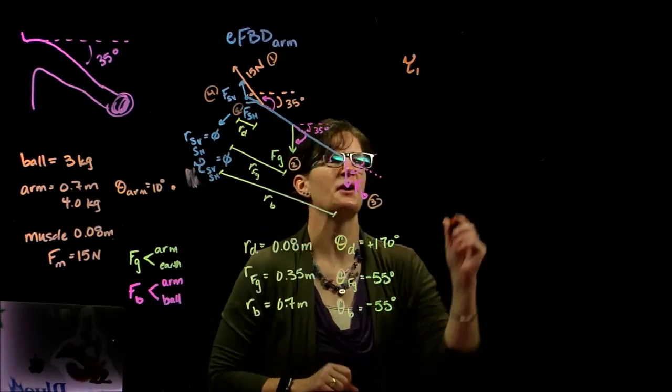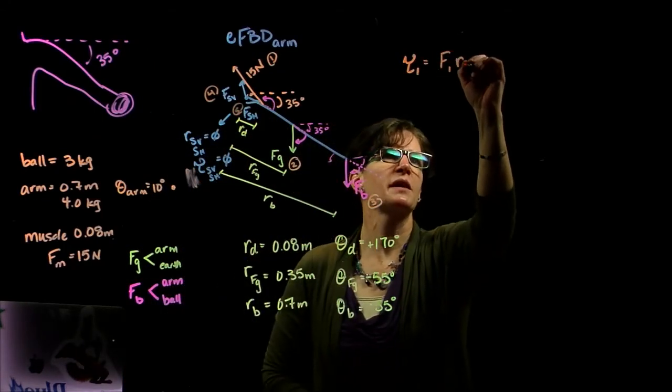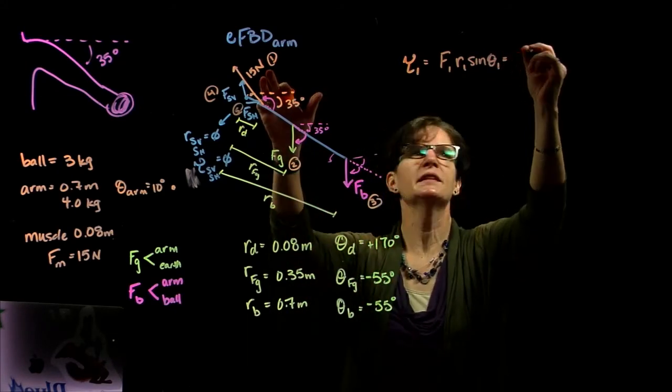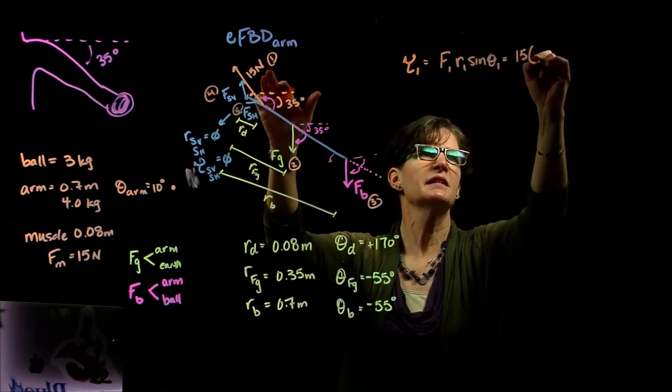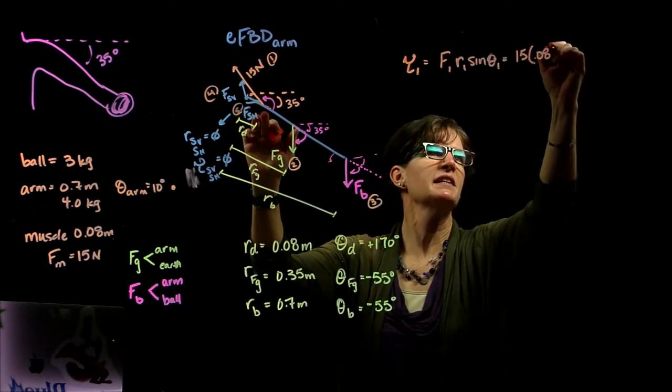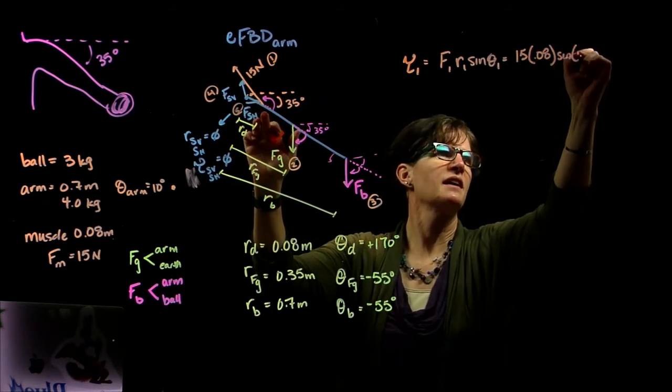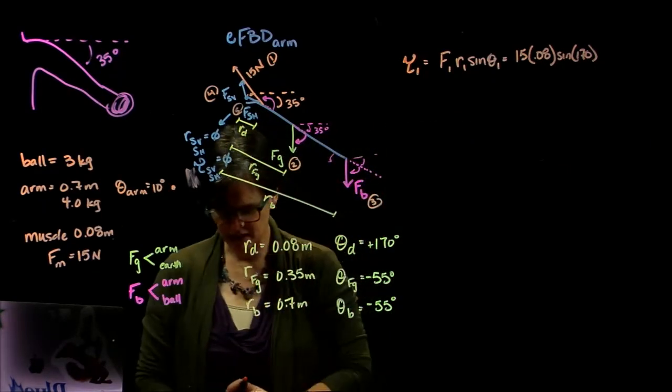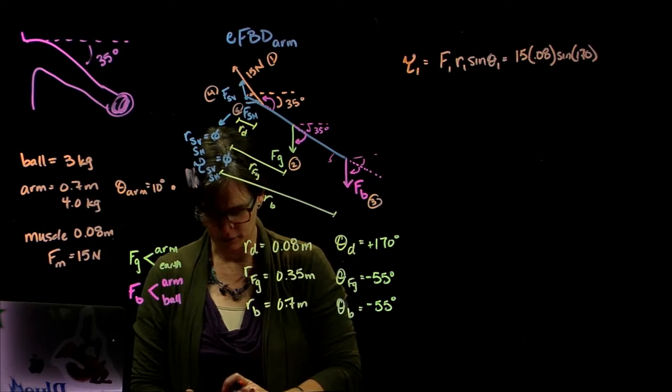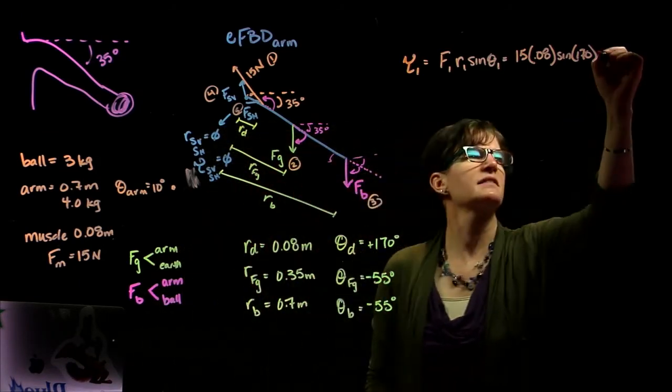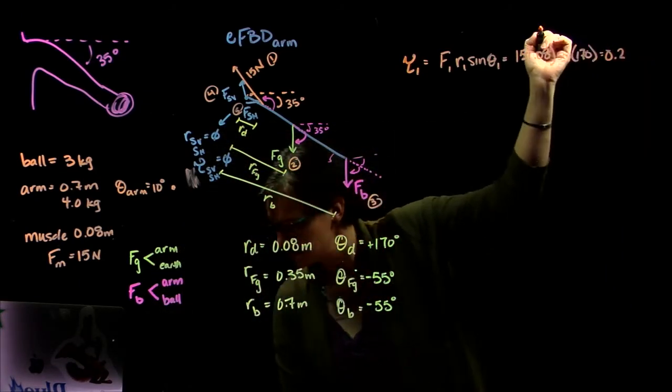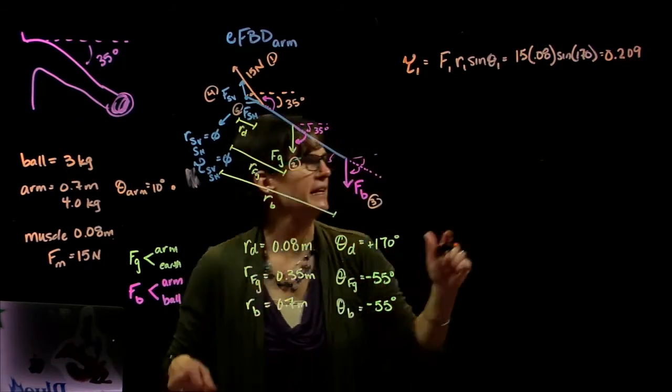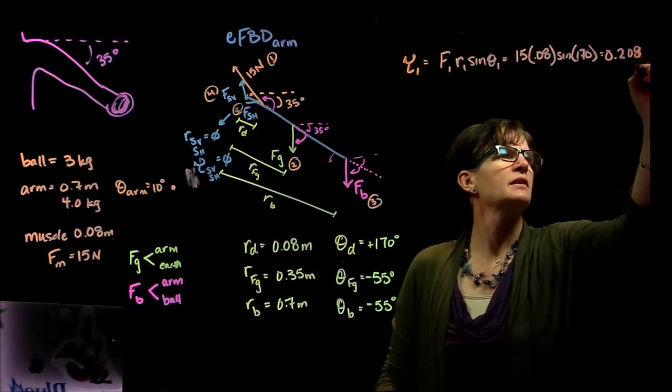So torque 1 is force 1, so torque 1 is force 1, the force for force 1 is 15 newtons, the radius is 0.08 times the sine of 170 degrees, which was positive. So 15 times the sine of 170, gives us 0.209 newton meters, or 0.208 newton meters.